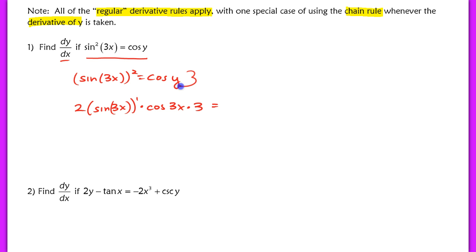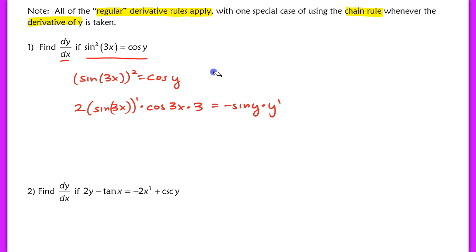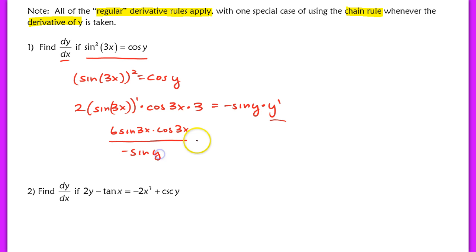On the right-hand side, differentiating cosine of y gives negative sine of y, and since y is a composite function, we multiply by y prime using the chain rule — giving negative sine y times y prime. To isolate y prime, we divide both sides by negative sine y. Simplifying the left-hand side gives 6 times sine of 3x times cosine of 3x, divided by negative sine of y. That is our derivative dy/dx.